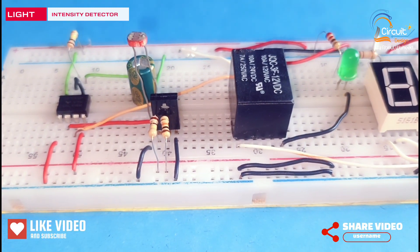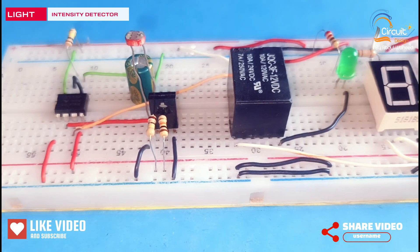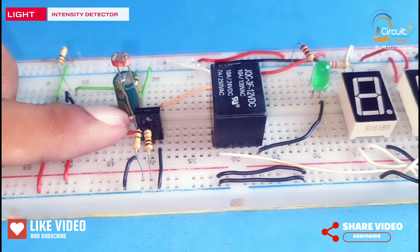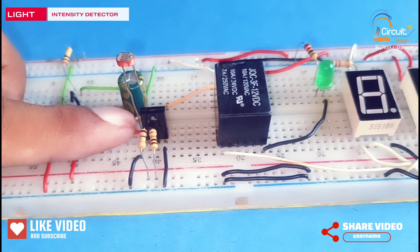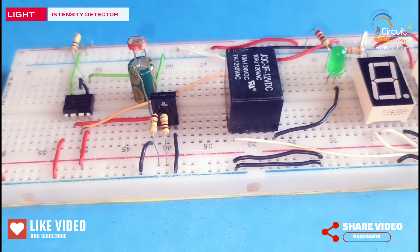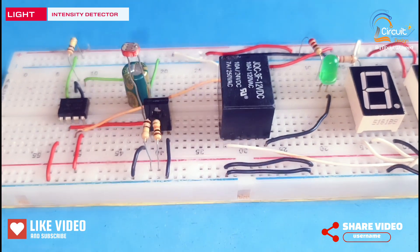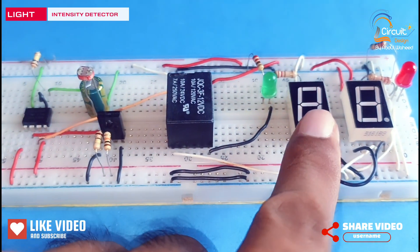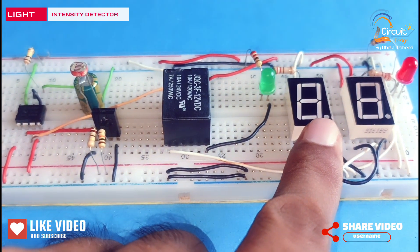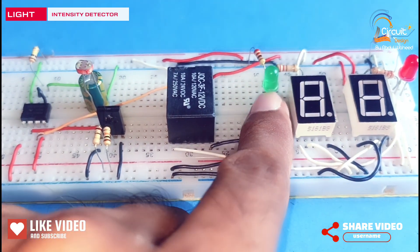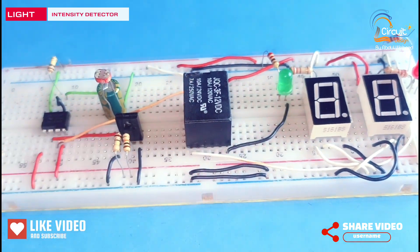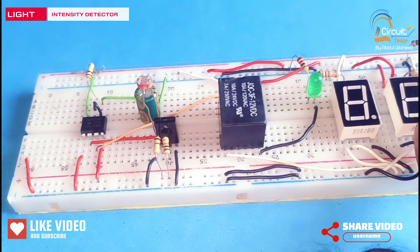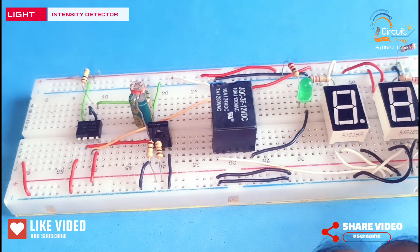Friends, now I explain the working of this circuit. In this circuit, LDR plays an important role which detects intensity of light. When there is low intensity of light around the LDR, then this seven segment display shows letter L and green LED will be on. For high intensity of light, this seven segment display shows letter H and red LED will be on.